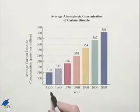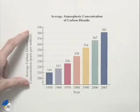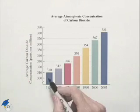We have the year given at the bottom, and we have the average carbon dioxide concentration in parts per million given along the vertical. And we can see the increase.